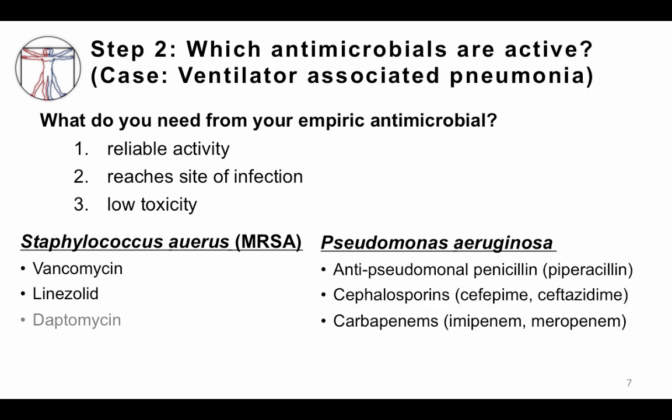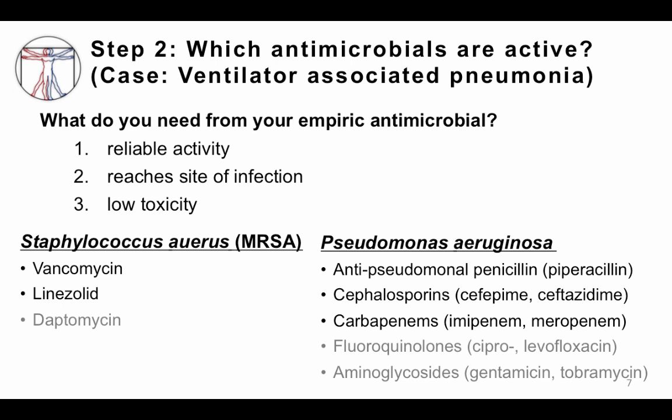To cover Pseudomonas and other gram-negatives, options include an anti-pseudomonal penicillin like piperacillin or ticarcillin, a later-generation cephalosporin active against Pseudomonas like cefepime or ceftazidime, or a carbapenem like imipenem or meropenem. Fluoroquinolones like ciprofloxacin and levofloxacin are active against Pseudomonas but less reliably so — resistance rates are increasing, and with a 25% resistance rate, you don't want to be wrong one in four times. Aminoglycosides are very active against Pseudomonas but have high nephrotoxicity and ototoxicity and poor lung penetration, making them a less ideal choice.